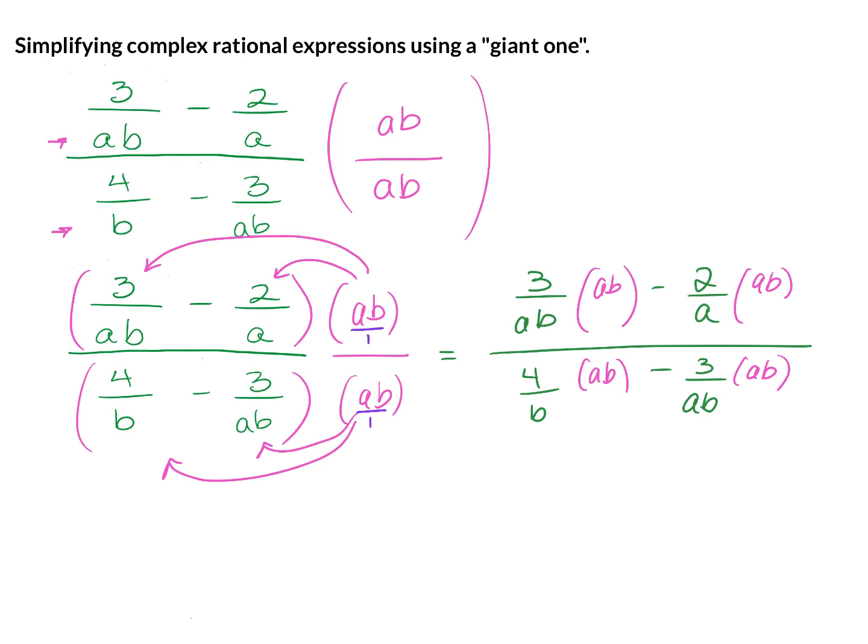Next, you're going to simplify. So AB and AB simplify, the 2 and the A simplify, the B and the B simplify, and the AB and the AB simplify. If you notice, all of your denominators have been simplified. AB, A, B, and AB have all been crossed out.